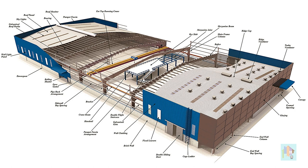Along with this, we need to model the purlin which supports the roof panel. Either a channel, Z-section or even a tube section is used for this. These are very important structural members as they not only carry and transfer the roof panel load but also provide adequate lateral stiffness to the rafter member. During design parameter assignment, I will discuss how the effective length for compression and lateral torsional buckling depends on the placement of the purlin members.